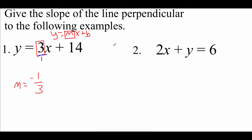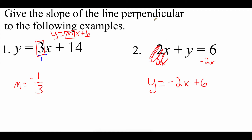Looking at the second example, this one is not written in y equals mx plus b slope-intercept form, so the first thing we do is rearrange it. We want to get y alone, so we subtract 2x from both sides — the positive 2x and the negative 2x cancel, leaving y equals negative 2x plus 6. Now we do the opposite reciprocal slope. The slope is negative 2; put it over 1, flip it so 1 is on top and 2 is on bottom. We started with a negative number, so the opposite is positive. The slope for every perpendicular line this time is positive one-half.